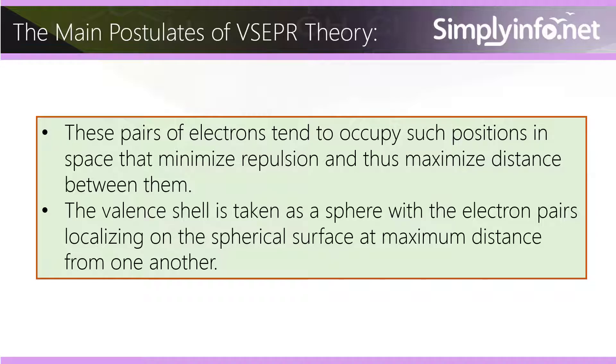These pairs of electrons tend to occupy such positions in space that minimize repulsion and thus maximize distance between them. The valence shell is taken as a sphere with the electron pairs localizing on the spherical surface at maximum distance from one another.